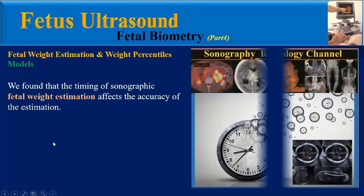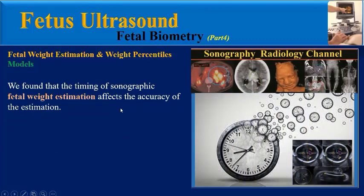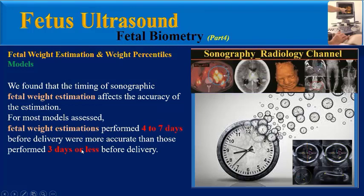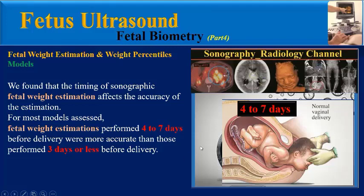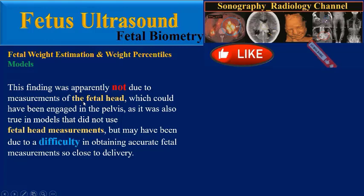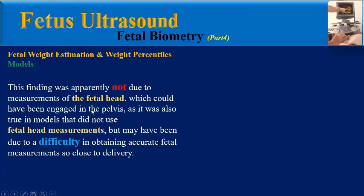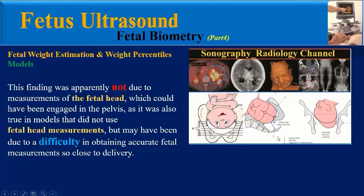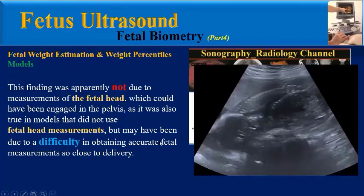The timing of sonographic fetal weight estimation affects the accuracy of estimation for most models. Fetal weight estimations performed 4 to 7 days before delivery were more accurate than those performed 3 days or less before delivery. This finding was apparently not due to measurements of the fetal head, which could have been engaged in the pelvis, as it was also true in models that did not use fetal head measurements.